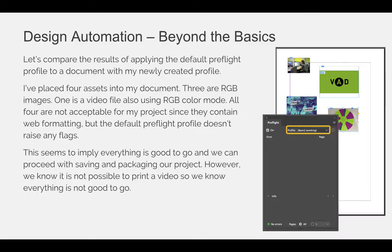Let's compare the results of applying the default preflight profile to a document versus my newly created profile. I've placed four assets into my document — three RGB images and one video file, also using RGB color mode. All four are not acceptable for my project since they contain web formatting, but the default preflight profile doesn't raise any flags. You can see I just have the basic working profile set and there are no preflight panel errors. This seems to imply everything is good to go, but we know it's not possible to print a video, so we know everything is not good to go.